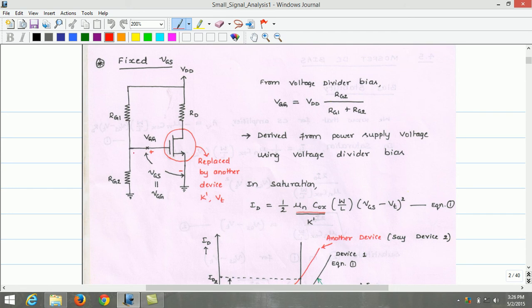From voltage division rule, the voltage at the gate of the transistor can be derived using this equation. VGG, the voltage at the gate equals VDD, supply voltage times RG2 divided by RG1 plus RG2. This supply voltage, the gate voltage, can be derived from the supply voltage using the voltage divider bias technique.